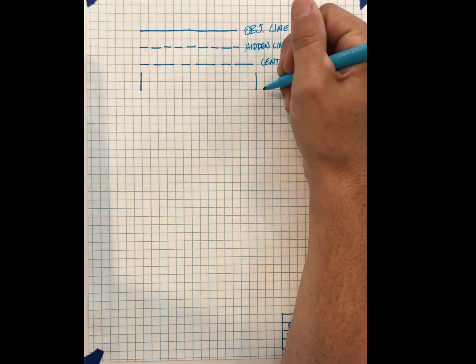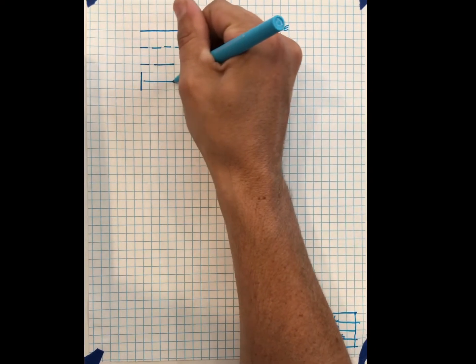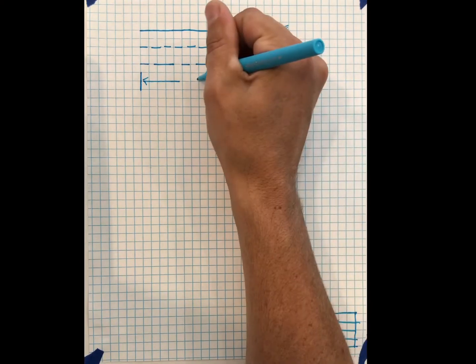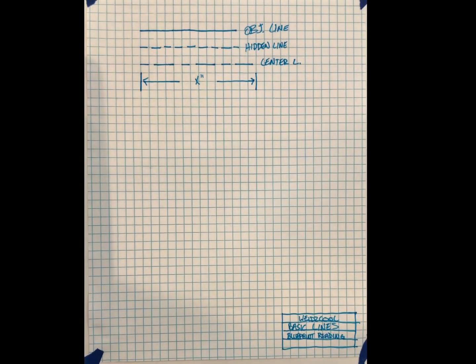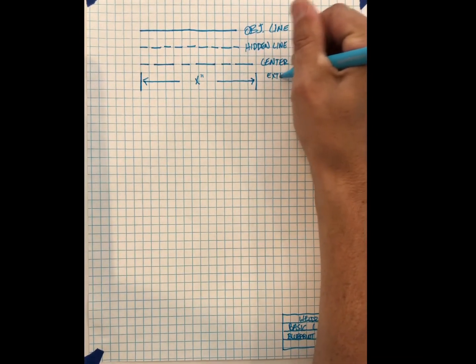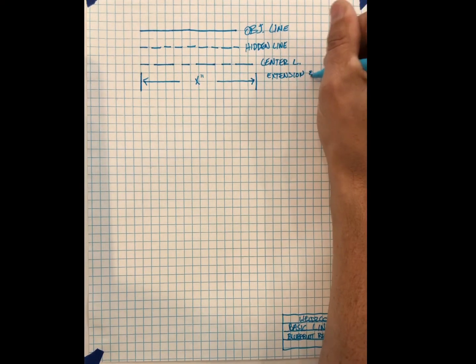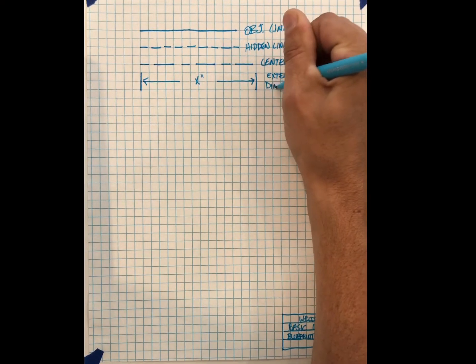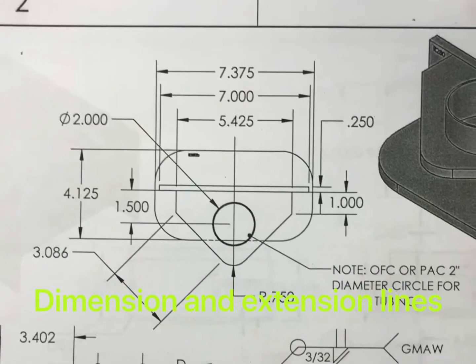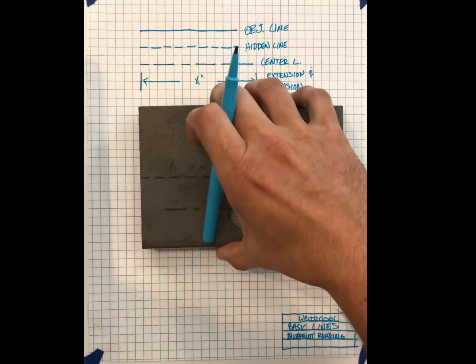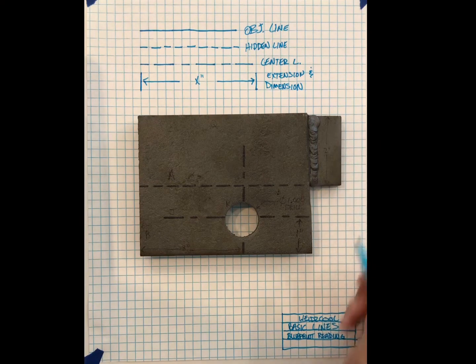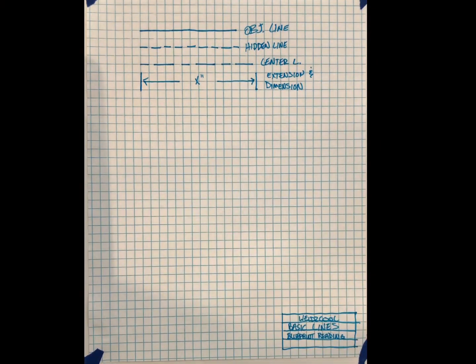We have our extension lines and then we have our dimension line. Whatever x equals in inches, millimeters, whatever the units are, so we have extension and dimension. If I was drawing this thing, I would pull those extension lines off of all these edges so that way I can give dimensions.